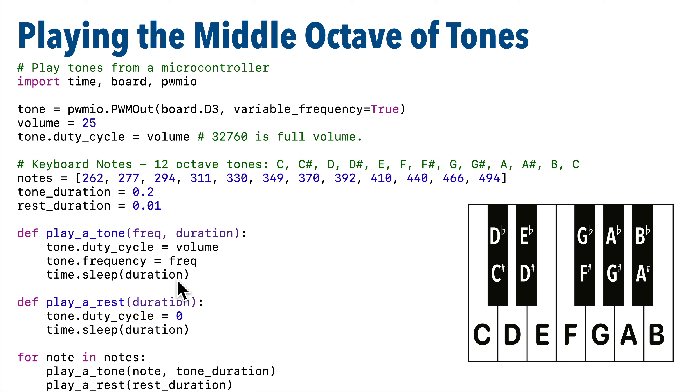The function play_a_rest takes one parameter duration, it turns off the duty cycle so that nothing is playing, and then it waits for the duration, which is the length of time that we don't want to play any sounds. This code doesn't have a while true loop to avoid playing things over and over again. This loop will only execute once, and then our code is going to end.